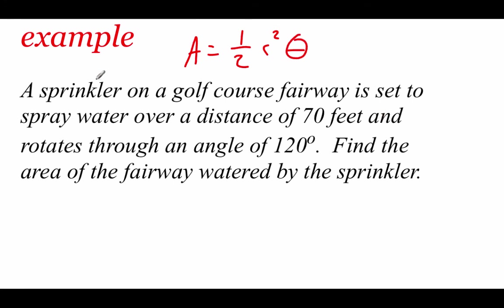So looking at this example, we've got a sprinkler on a golf course fairway. It's set to spray water over a distance of 70 feet, and it rotates through a 120 degree angle. We want to find how much of the fairway is watered by this sprinkler. So we're looking at this area formula that I wrote up at the top of the page. One half times the radius squared times theta.